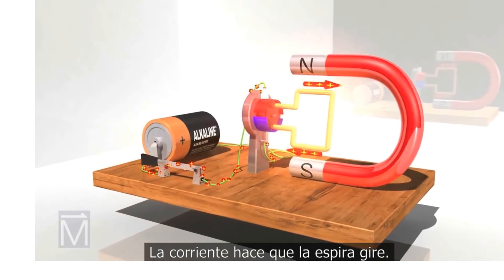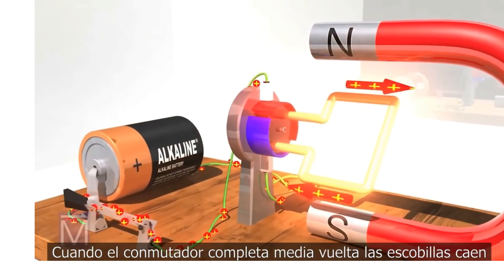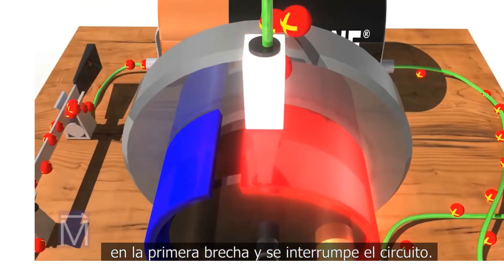The current enters the first arm, making the coil spin. But this time, just as the commutator reaches the halfway point of its first cycle, a brush reaches the first gap.